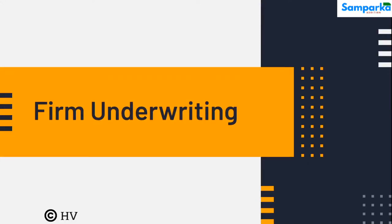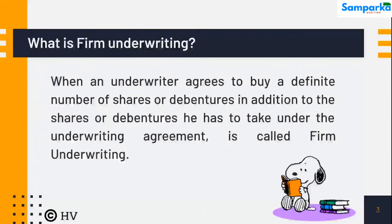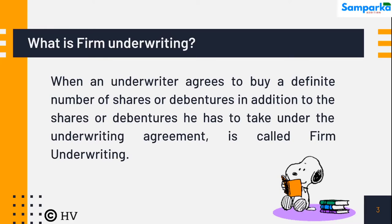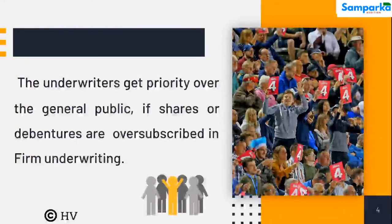Let's see the topic on firm underwriting. When an underwriter agrees to buy a definite number of shares or debentures in addition to the shares or debentures he has to take under the underwriting agreement, it is called firm underwriting. The underwriters get priority over the general public.